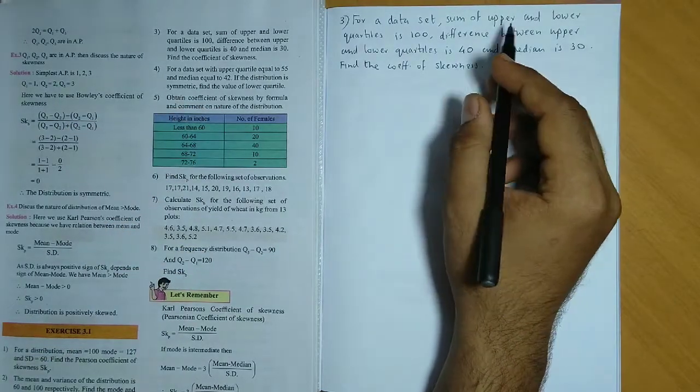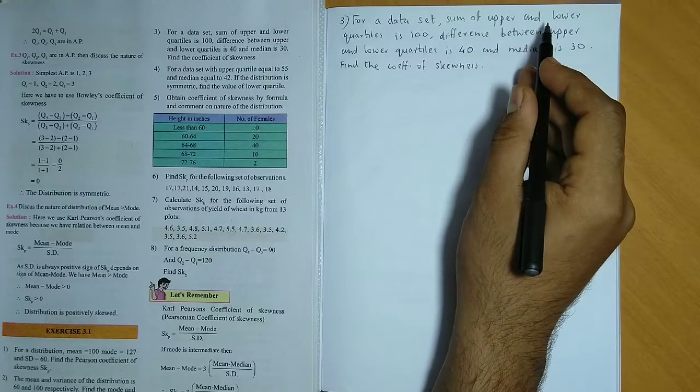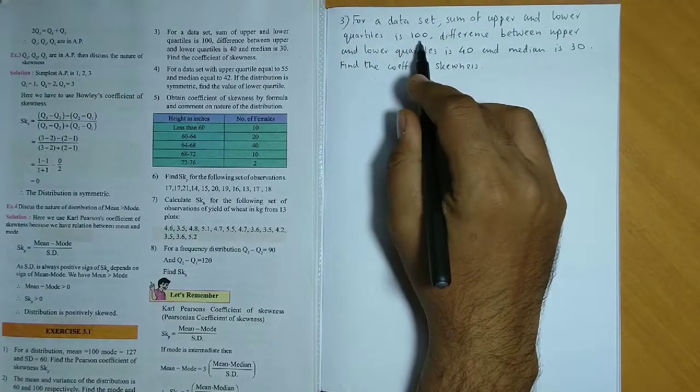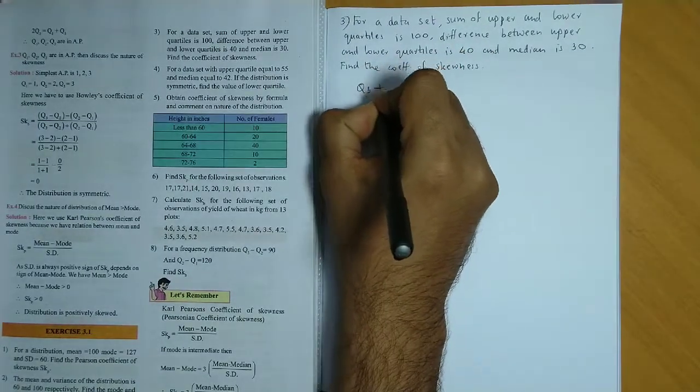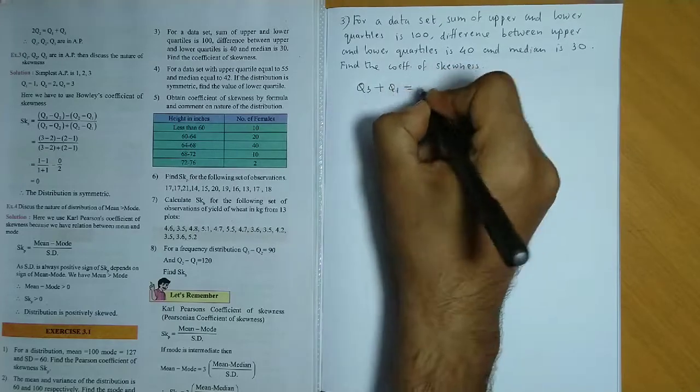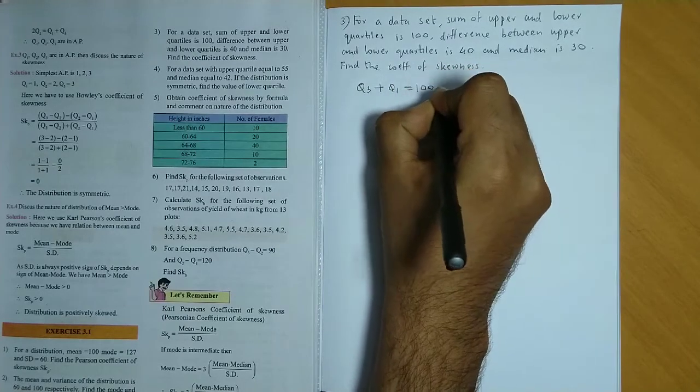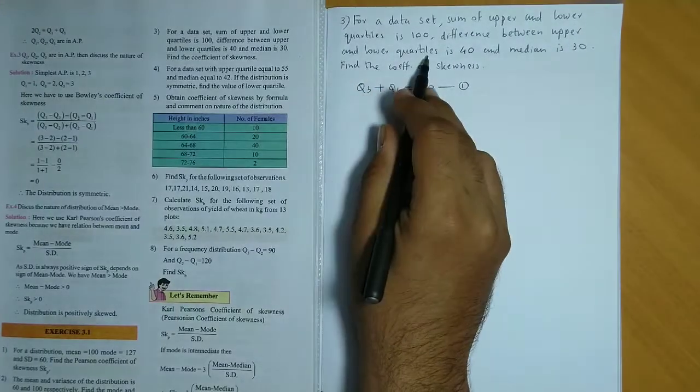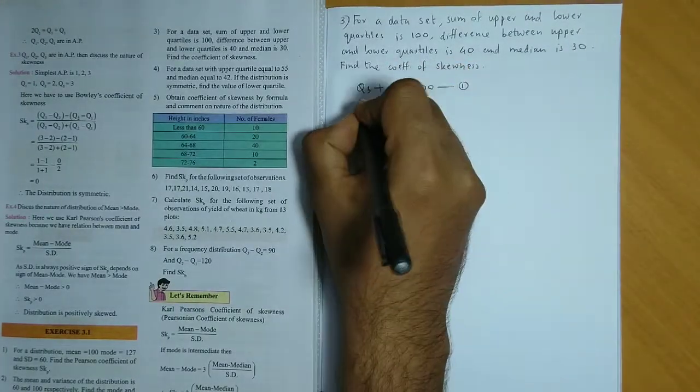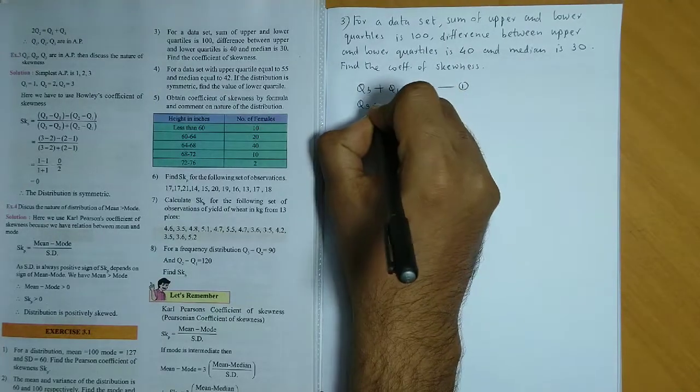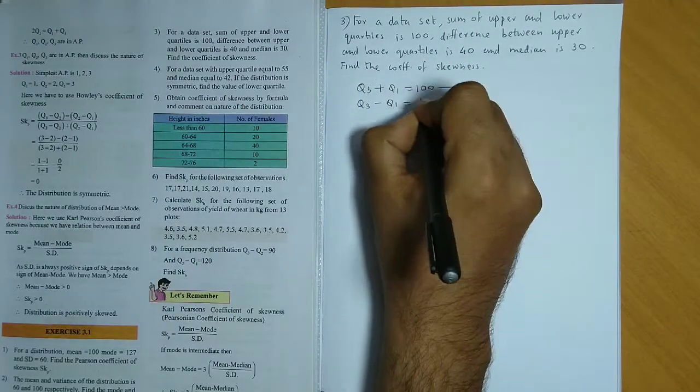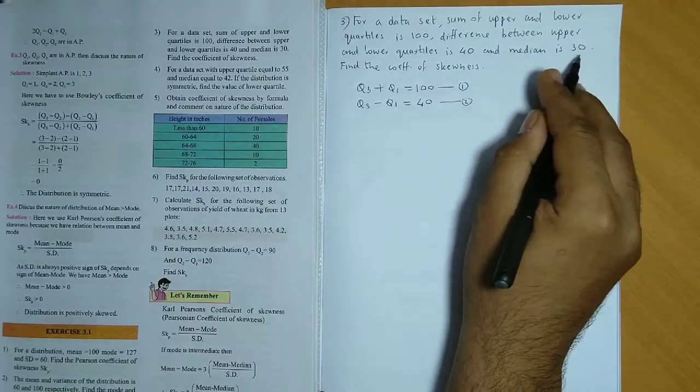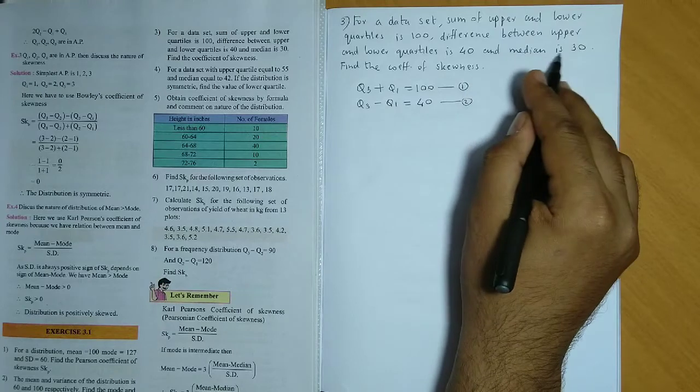Now we know that upper quartile is Q3 and lower quartile is Q1. So sum of upper and lower quartile is 100. So Q3 plus Q1 total is 100. So here equation 1. And difference between upper and lower quartile is 40. Difference we subtract. So Q3 minus Q1 difference is 40. And our median is 30. That is Q2 value is 30.